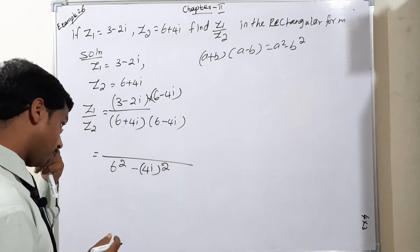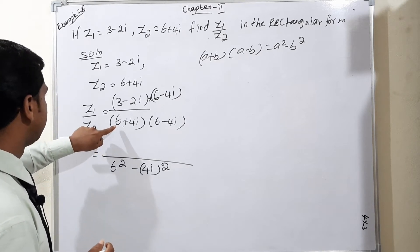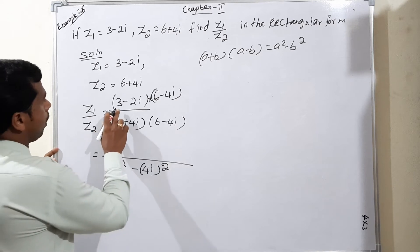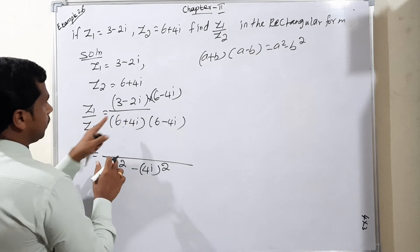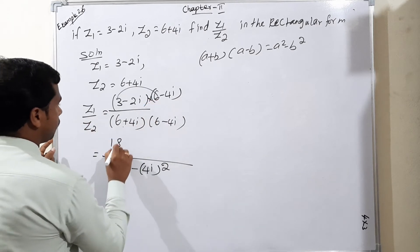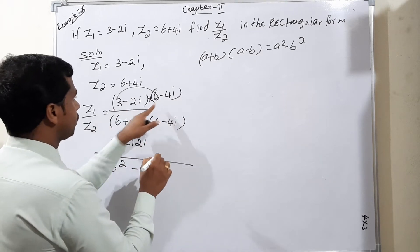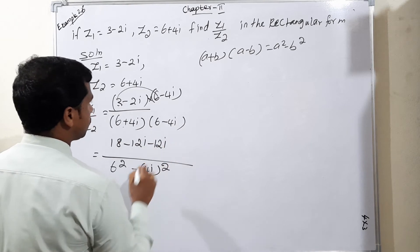Now what you have to do? 6 square means 6 into 6. Now 3 minus 2i, 3 minus 2i means 3 into 6, 18. Next condition, 3 into minus 4i means minus 12i. Again, minus 2 into 6 means minus 12i.